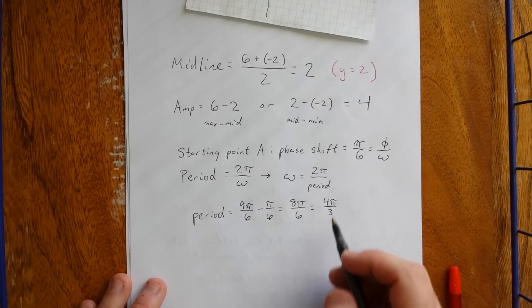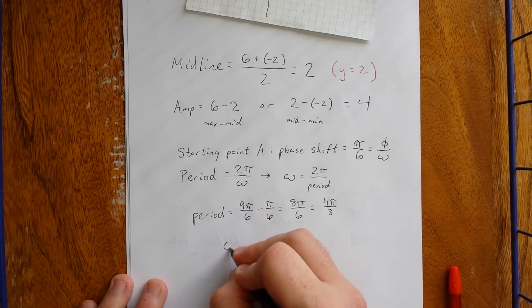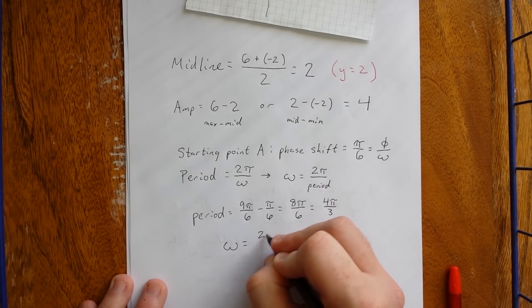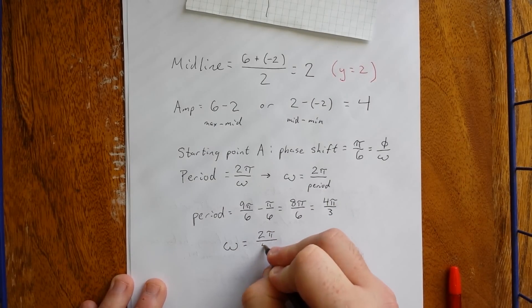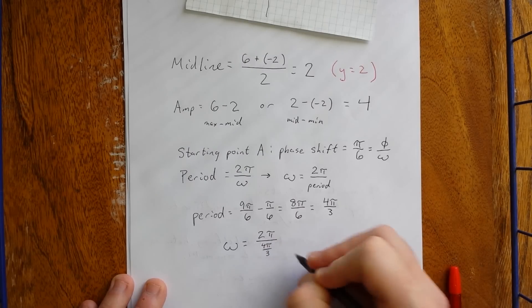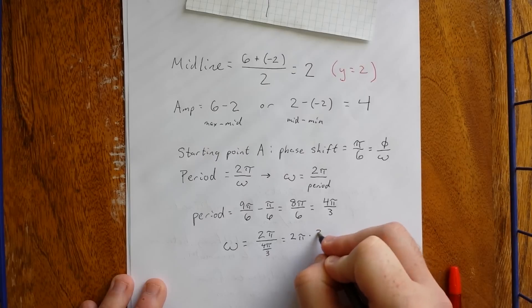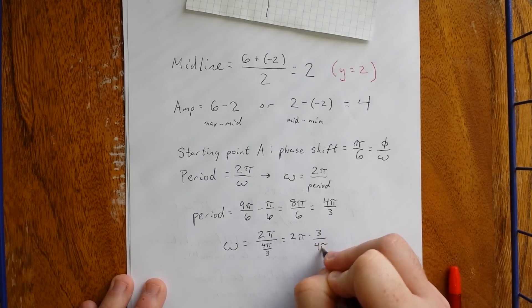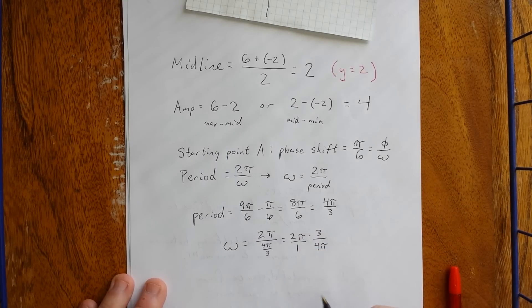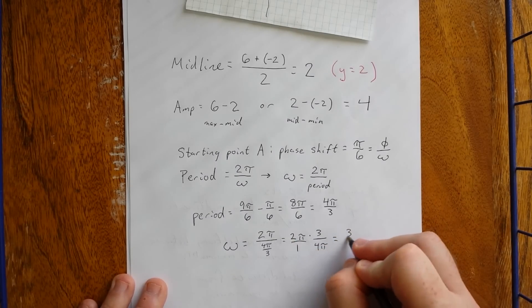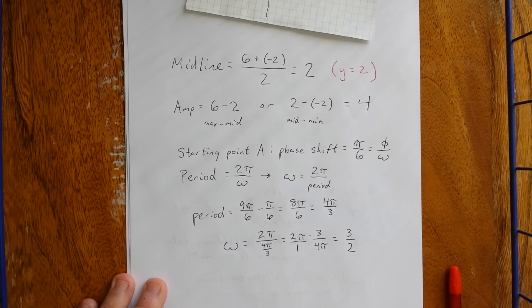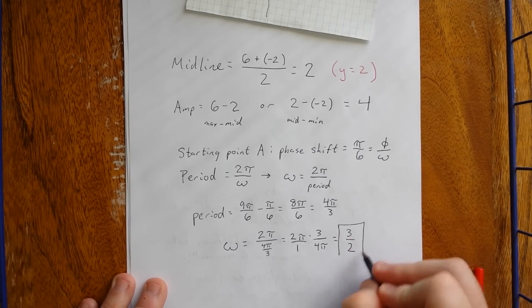So, plugging that back into this formula right here, we can calculate our value for omega. Omega is now going to be equal to 2 pi over the period, which is 4 pi over 3. Dividing by a fraction is the same as saying let's multiply by the reciprocal. We'll express 2 pi as 2 pi over 1. Cancelling out the 2 pi's will give us 3 halves. So that is our value for omega.